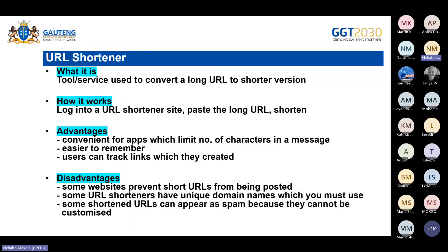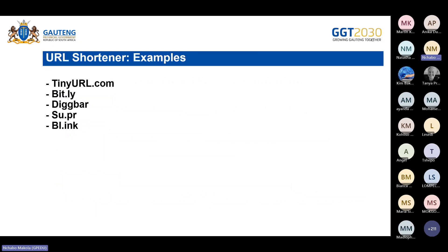After this, let's look at the different examples of URL shorteners, which you can also find in the examination guidelines. Remember, this is revision — work you have already been taught at school. The different examples include tinyurl.com, which is the one shown in the first screenshot.